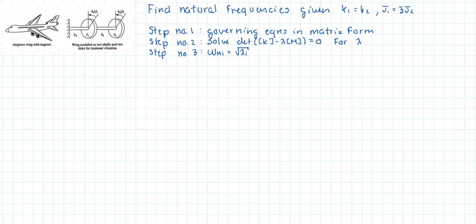In this video we're going to do that directly — we'll draw a free body diagram and then write the equations directly. Step two will be to solve the equation that says the determinant of the stiffness matrix minus lambda times the mass matrix is equal to zero for different values of lambda. Since it's a two degree of freedom system we expect two values of lambda, and the natural frequencies are equal to the square root of those lambda values.